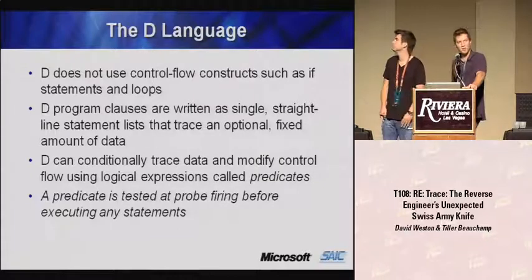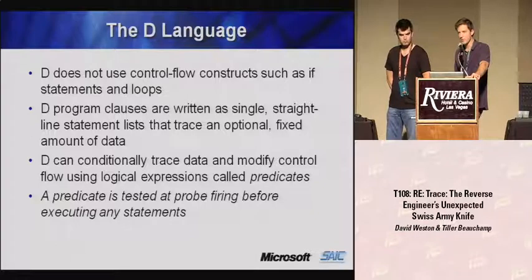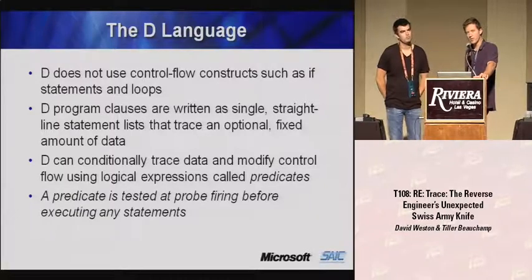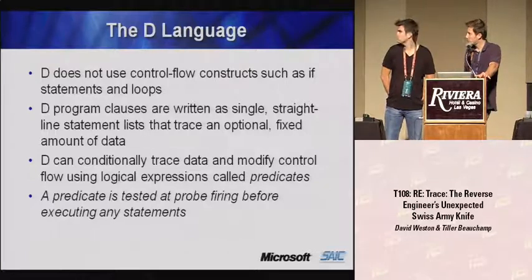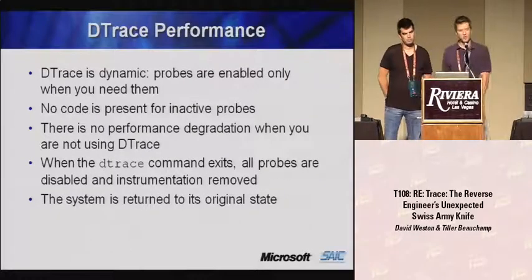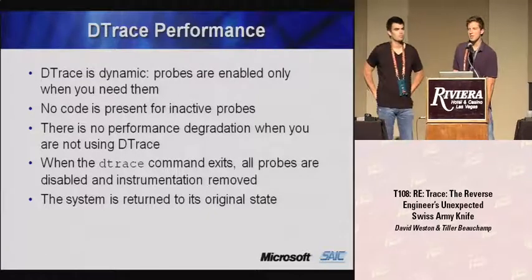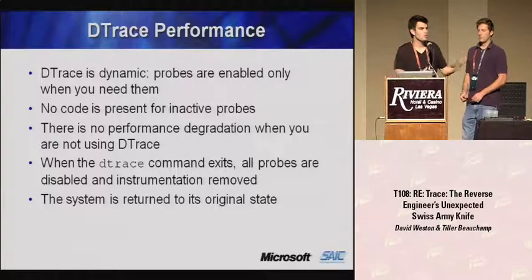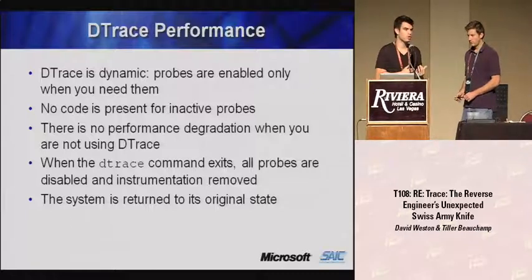D turns out to be quite limiting because it doesn't have control flow — no loops — which really limits what we can do with logic. It's meant for taking measurements, doing comparisons, and small amounts of recording. There's good reason for this: you don't want the kernel to hand off control to some script that's hooking a function that never returns. Safety and performance are major priority requirements in DTrace's design, which sometimes works to our advantage and sometimes not.